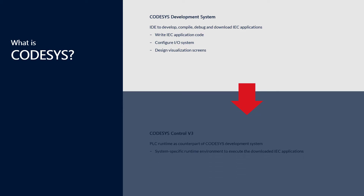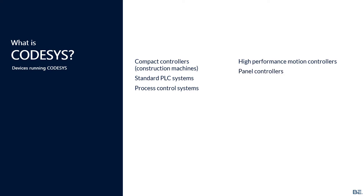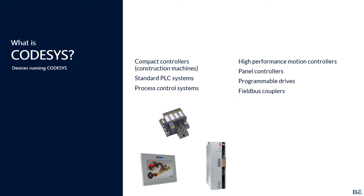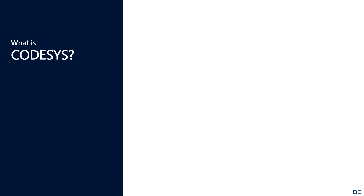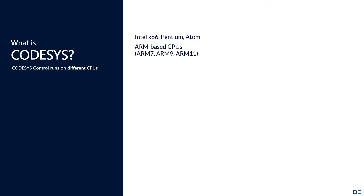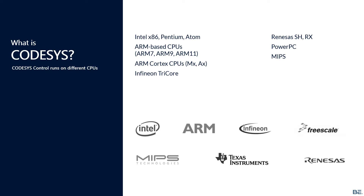The CODESYS runtime system is the counterpart of CODESYS IDE and runs the downloaded IEC applications. CODESYS runtime can run on different device types — compact controllers, standard PLC systems, and process control systems — as well as different CPU architectures and operating systems. The most popular combination for at least the last five years is Linux and ARM, which opens brilliant opportunities for software functionality and performance.